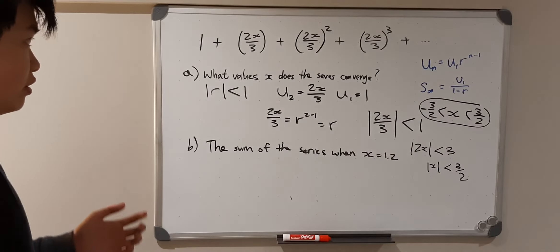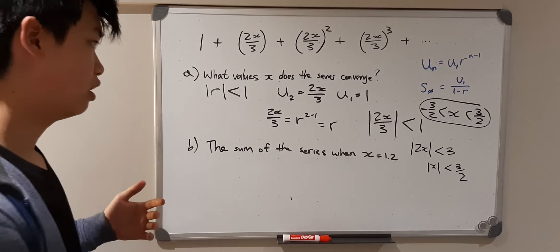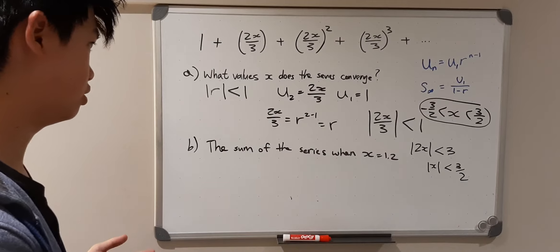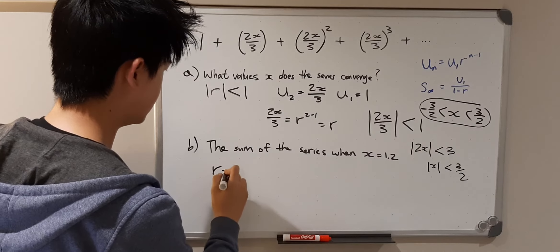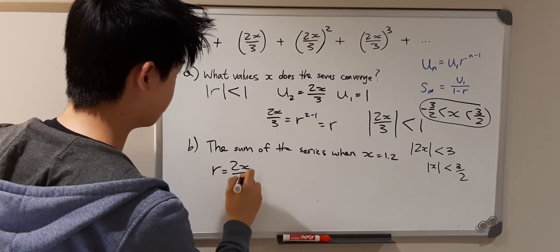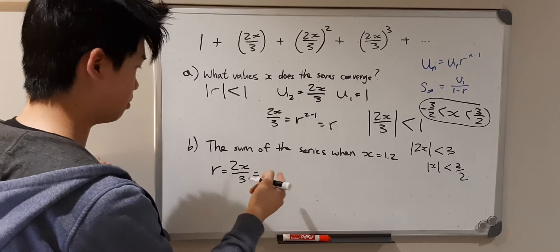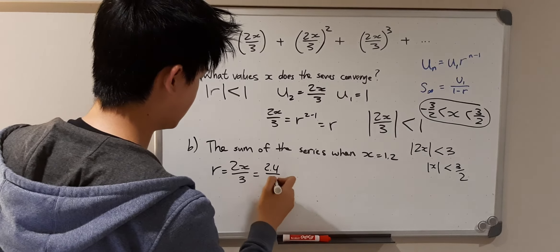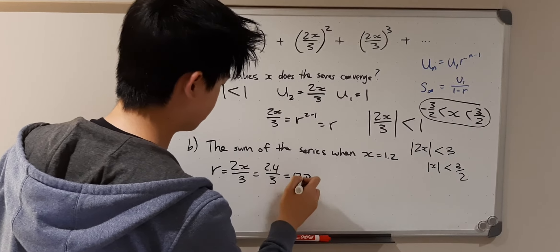Okay, so now the sum of the series when x equals 1.2. We know that r is equal to 2x over 3. And we know that if x equals 1.2, that's going to be 2.4 over 3, and that's going to equal 0.8.